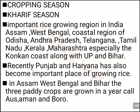In Assam, West Bengal and Bihar, rice is cultivated in a very different way — three crops of rice are grown in a single year. One cropping season of rice is done, and after harvesting that season they sow rice again. So they actually do three rice crops in one year in these states. Those three rice crops are called Aus, Aman and Boro.